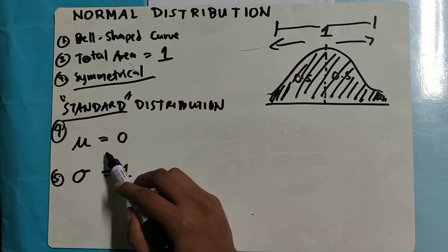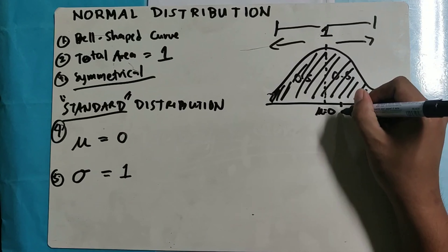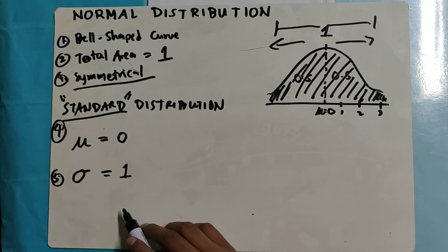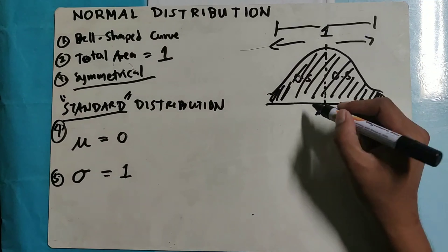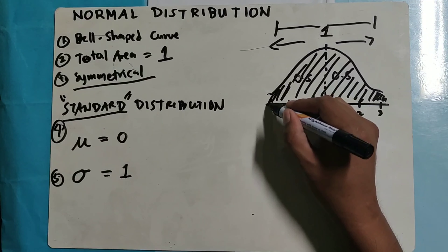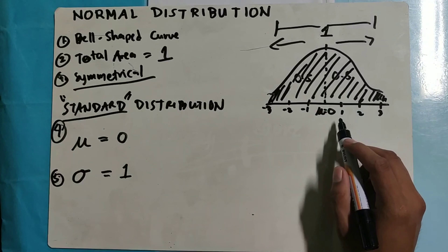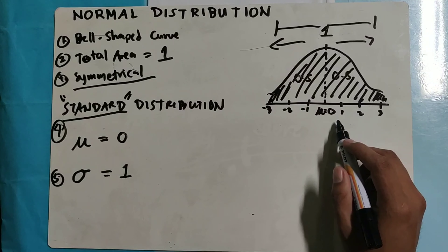When we hear the word standard, the population mean — or mu — represents the population mean and is equal to 0. The fifth property: sigma, or the population standard deviation, is equal to 1. So when we hear the word standard, the population mean is equal to 0 and the population standard deviation is equal to 1.